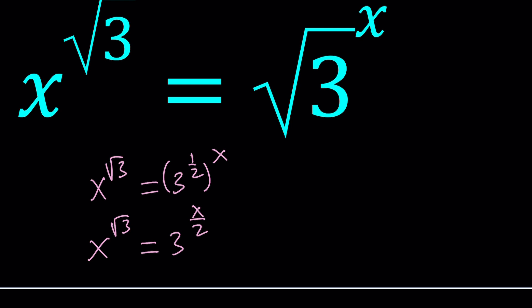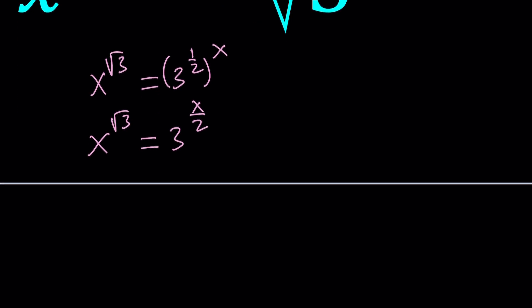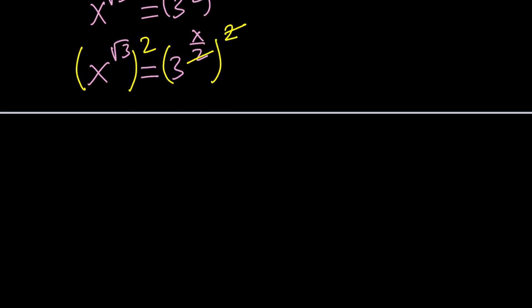The next thing that I like to do is get rid of the fraction, so why don't we square both sides? Obviously, squaring both sides could be a little dangerous because you might be introducing some extraneous solutions, which you need to check at the end. When you square both sides, the twos are going to cancel out, and we end up with x^(2√3) = 3^x.